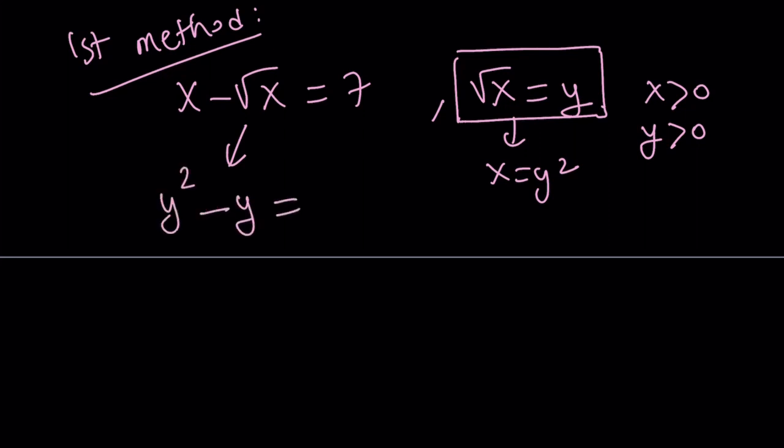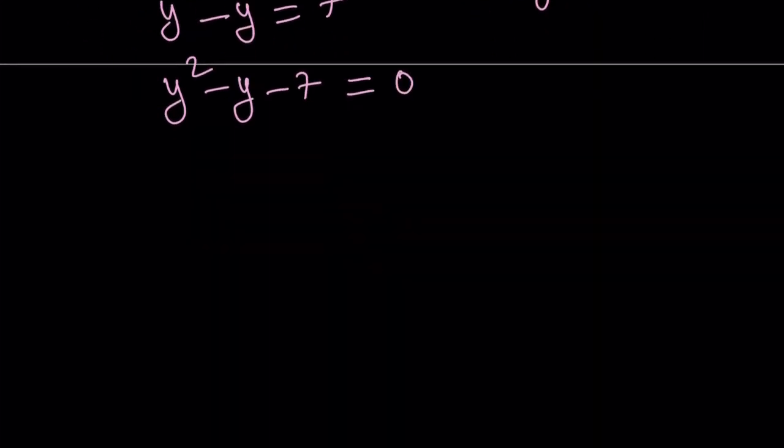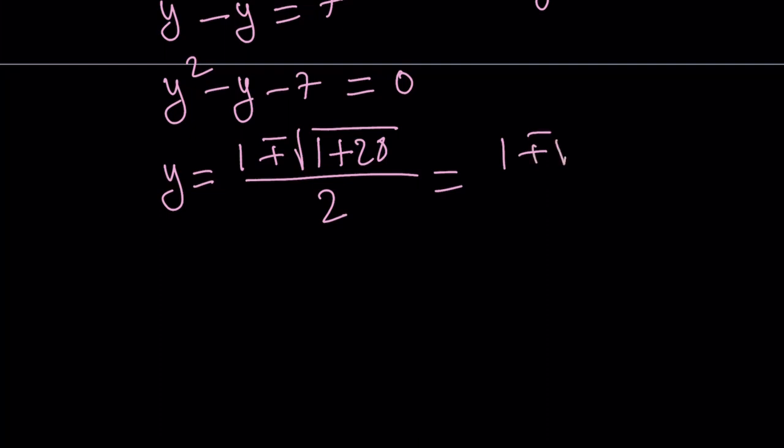Let's go ahead and replace x with y squared and square root of x with y. That gives us a quadratic equation, which is very easy to solve because there is a quadratic formula. This is not factorable into integers, so we're going to write the quadratic formula, negative b plus minus the square root of b squared, which is 1, plus 4ac, which is plus 28. That's going to be 29, so y is going to be 1 plus minus the square root of 29 divided by 2.